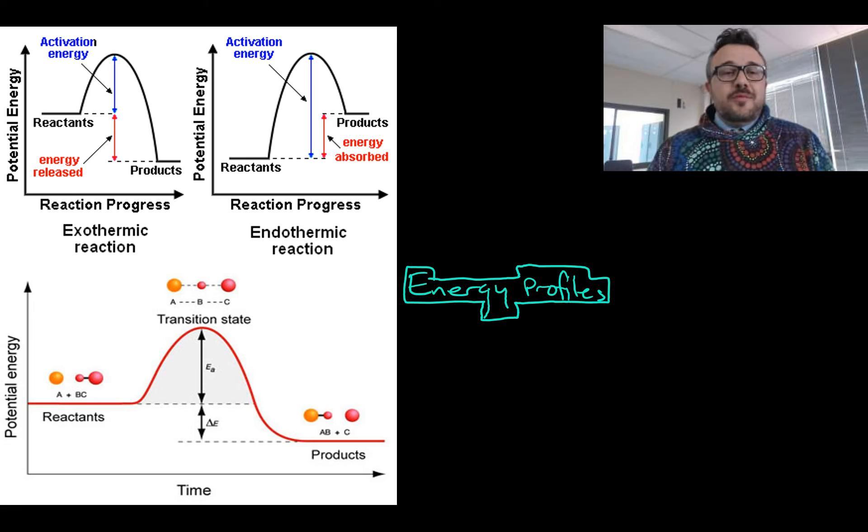Now that we know about activation energy, let's look at energy profiles. This is a typical energy profile. We've got reactants, this is the energy stored in the reactants like in the bonds. And then we add energy to the system which gets it up to its transition state, which means the activation energy has been achieved. And then it drops down to either above or below this line, but it's still always a drop to our products.